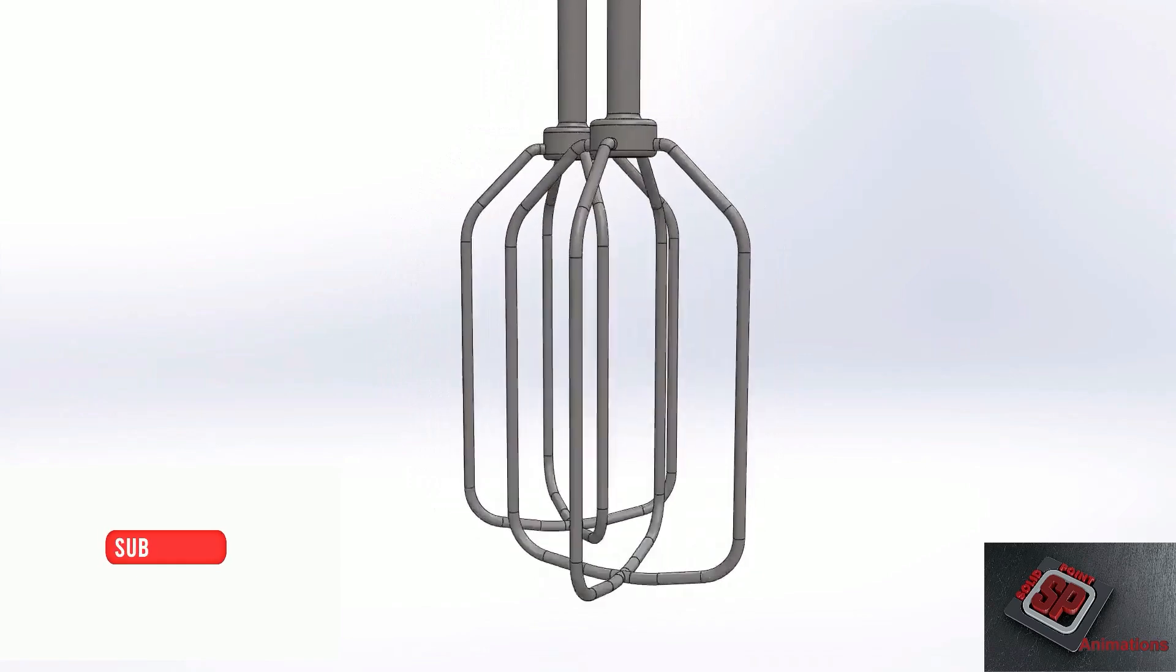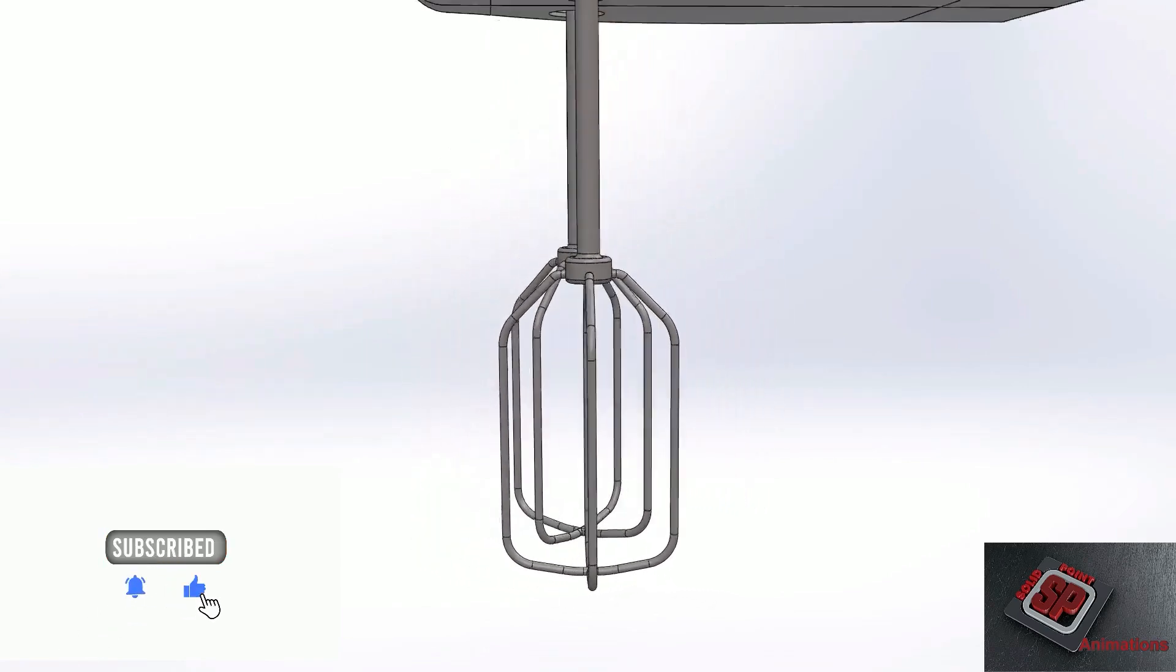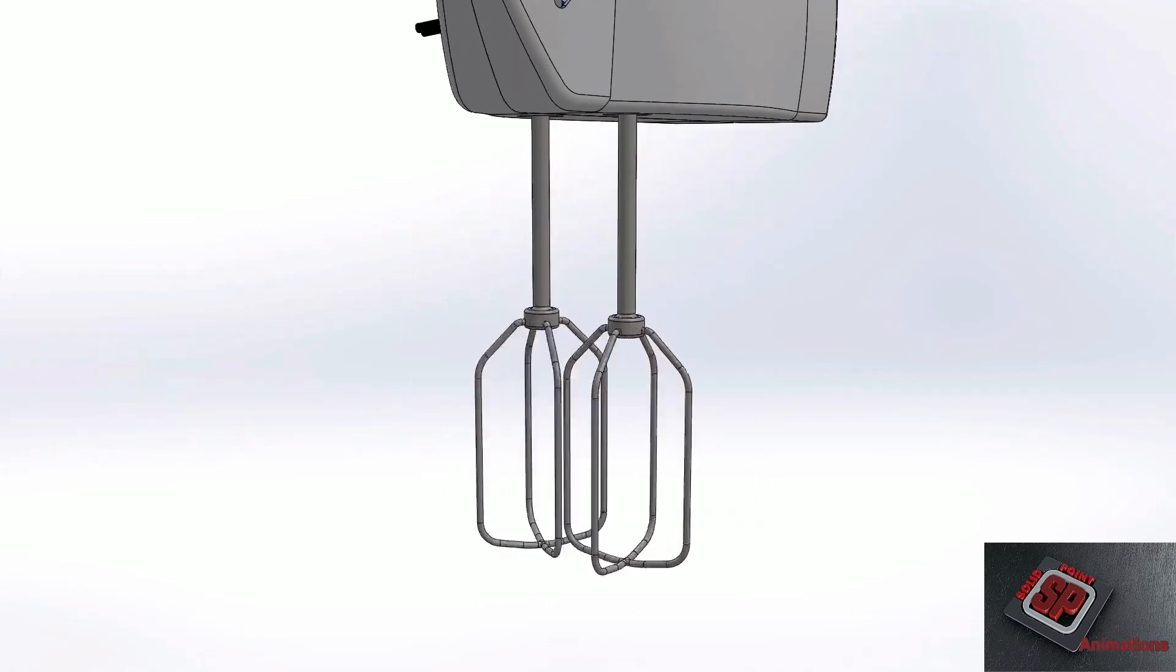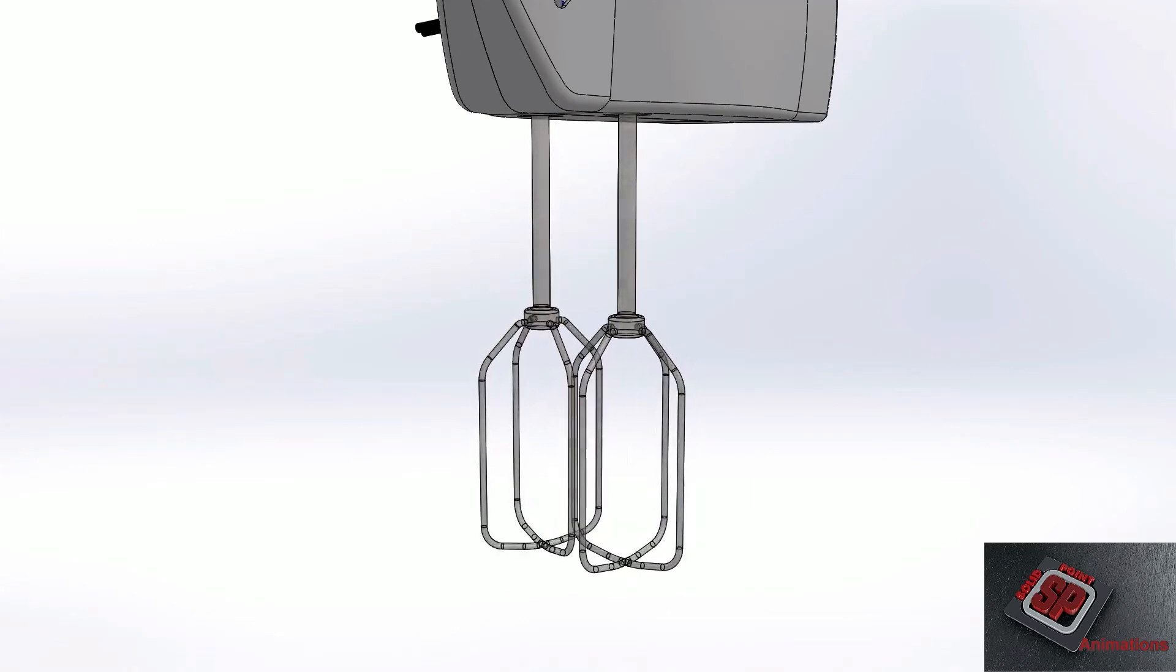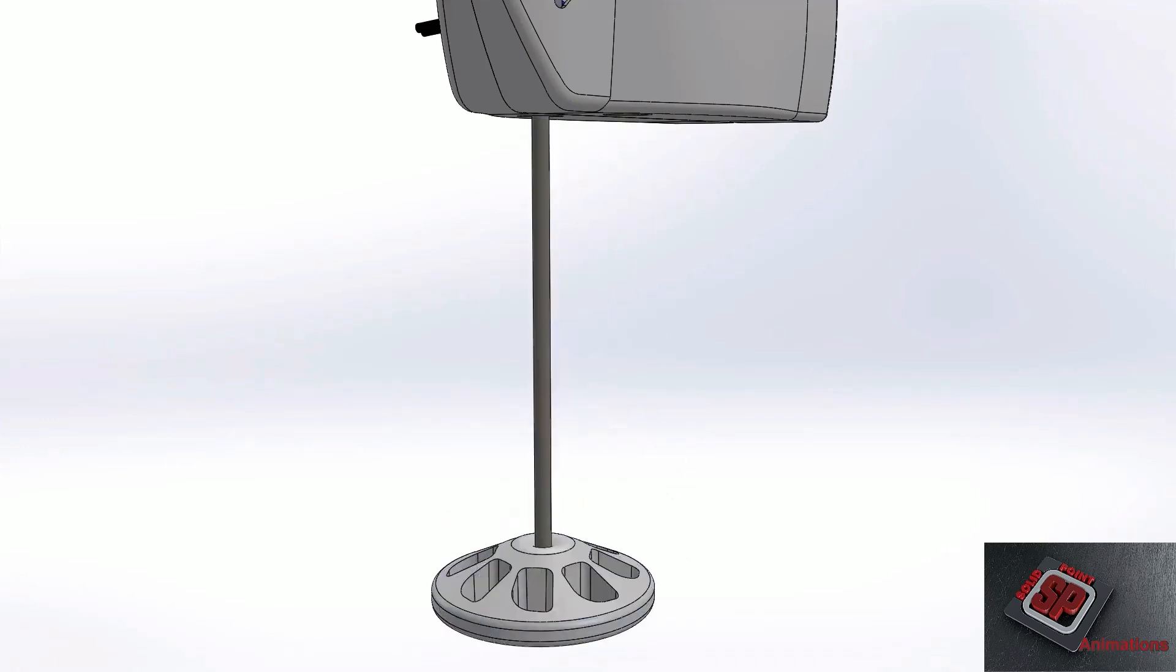We will get into how this is accomplished later in this video. While beaters are the most common type of attachment to the hand mixer, there are other types as well. These additional attachments are generally sold separately. There is the whisk rod, blending, and dough hooks, to name a few.